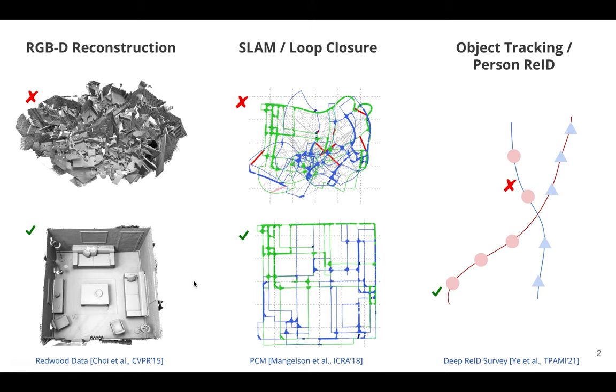And even with a few incorrect data associations, we can really end up with the totally wrong solution as shown here on the top row in some of these applications. So the goal of this talk is to talk about how to efficiently reject spurious data associations.